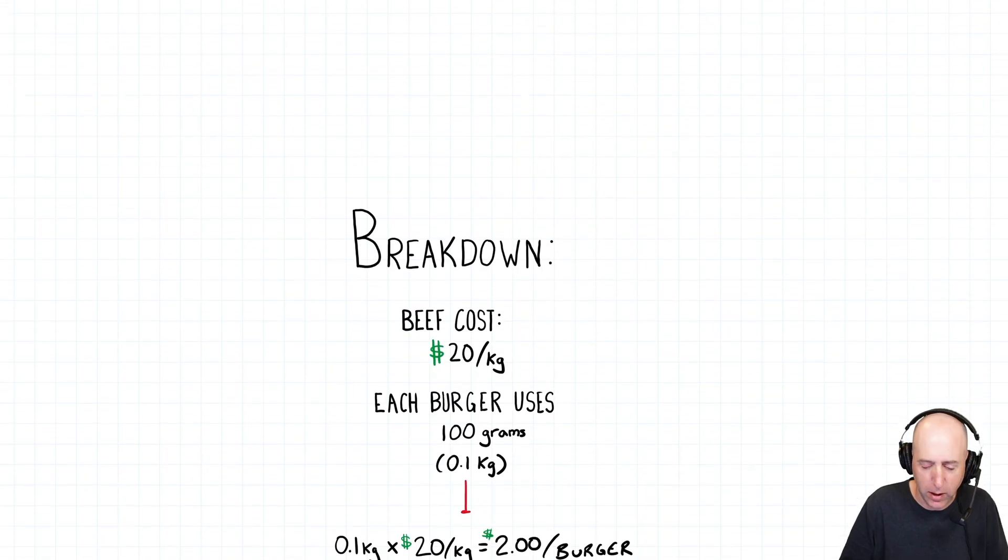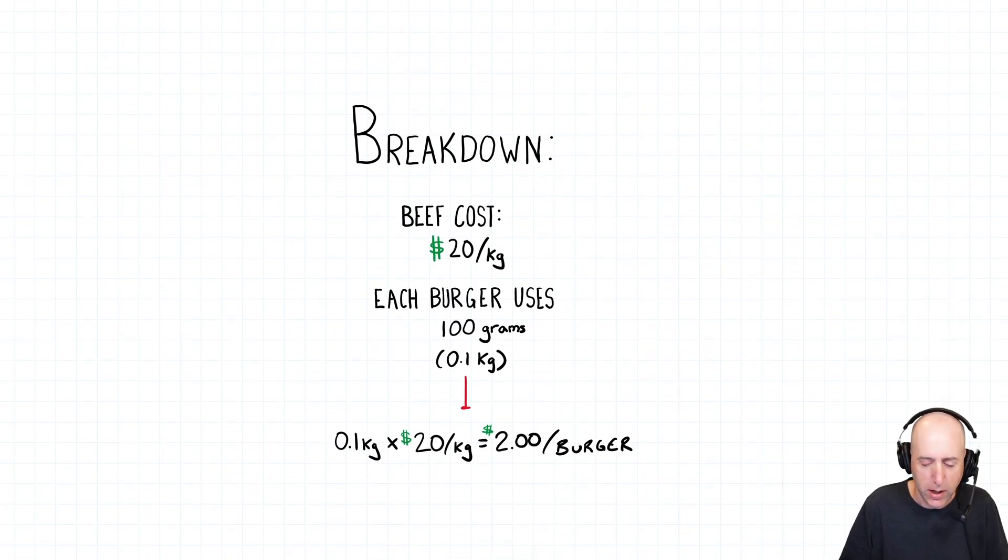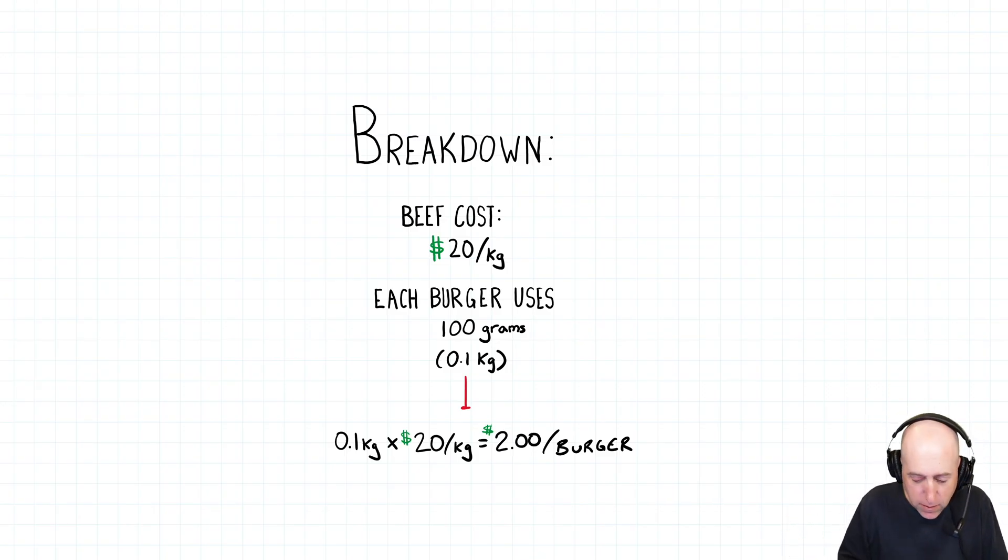But he was overspending on beef and he couldn't get a handle on what was going on. And so I said, OK, we'll break down that two bucks a burger. Why do you think it costs you two bucks a burger? And he said, well, this is the situation. Beef should cost twenty dollars a kilogram and each burger I make uses about one hundred grams.